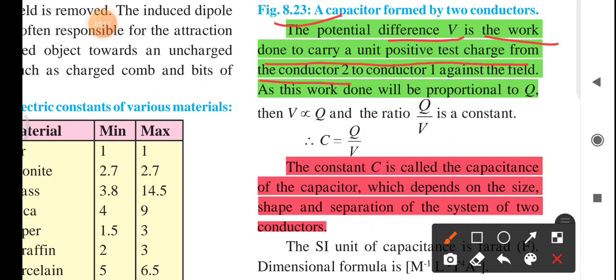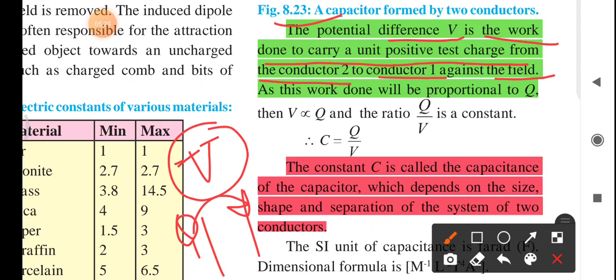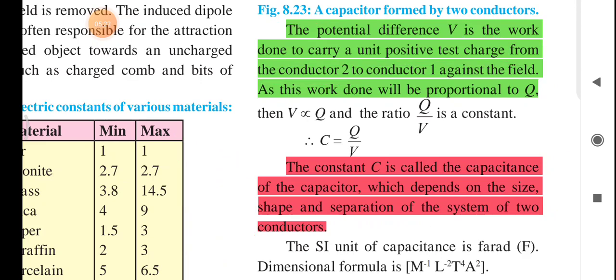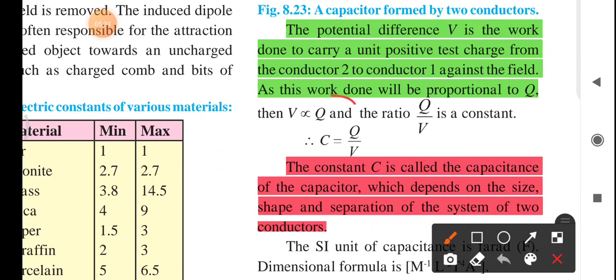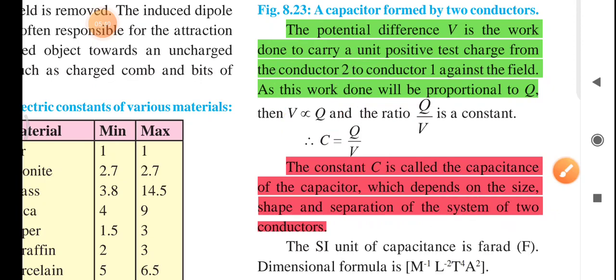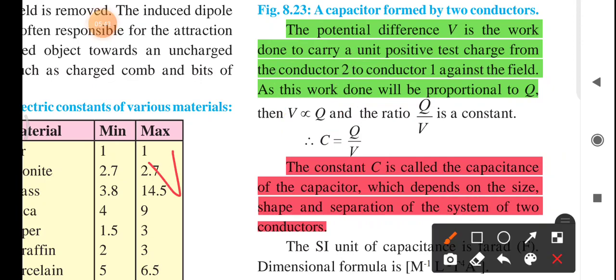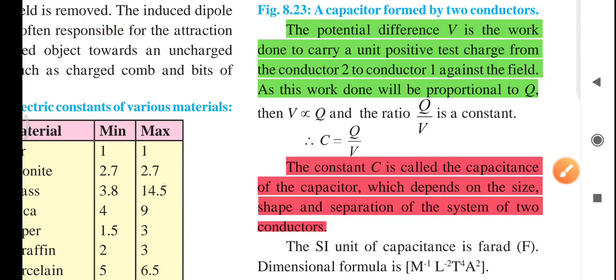The potential difference V is the work done to carry a unit positive test charge from conductor 2 to conductor 1 against the field. So V is directly proportional to Q. Therefore, Q by V is constant. That constant of proportionality is called as C or capacitance.